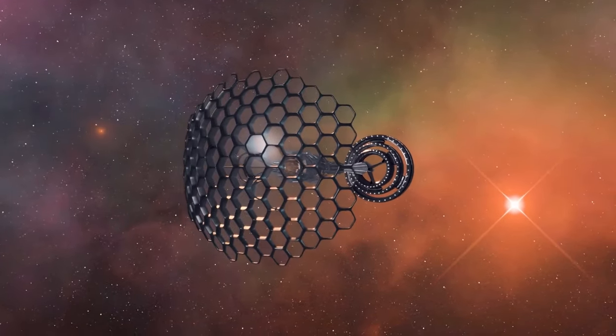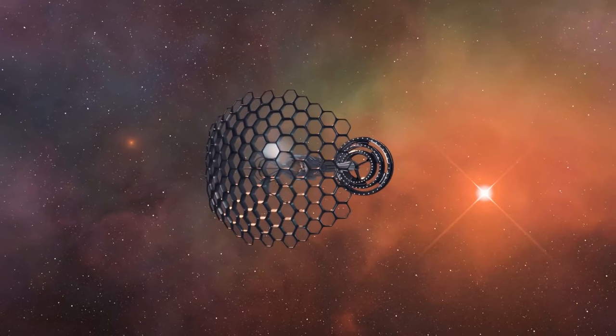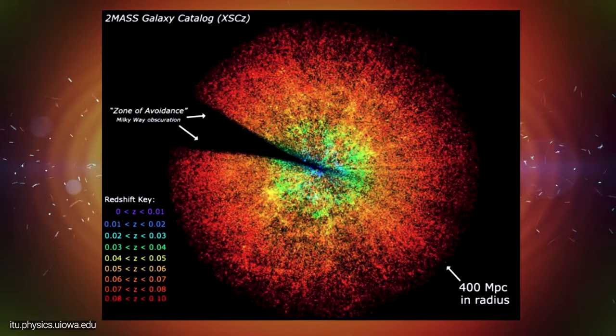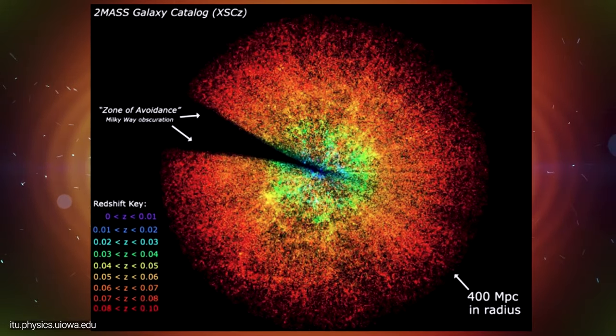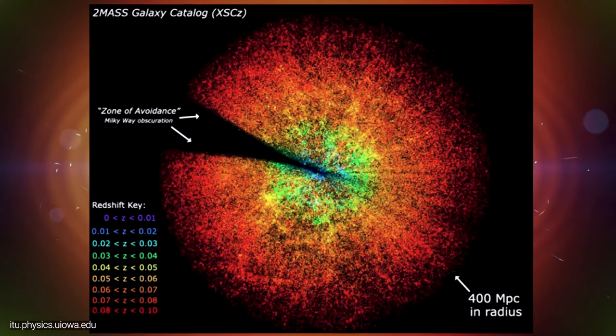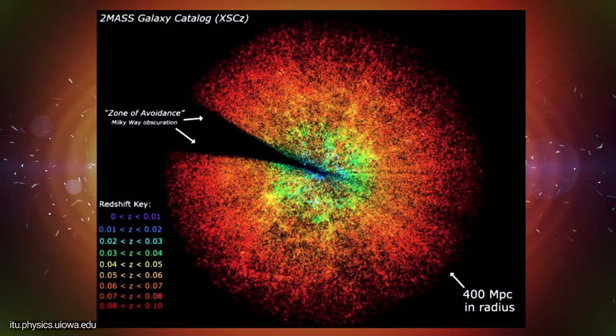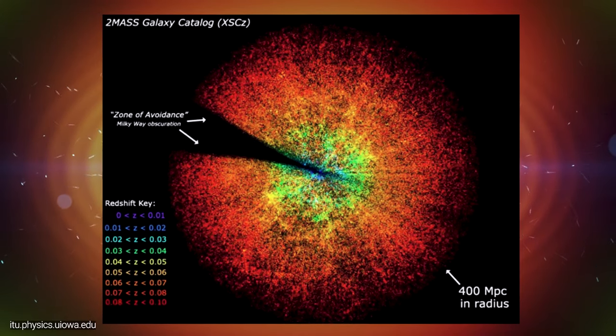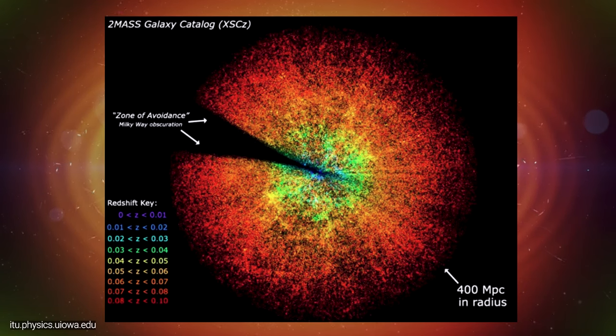If you want to really nail down the redshift of a galaxy, what you do is you get a high resolution spectrum. You break the light down from that galaxy into all its different components. So you'll look at how much of this wavelength, how much of that wavelength, et cetera.